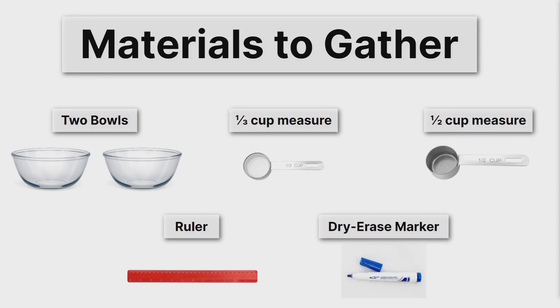You'll also want a dry erase marker to label each bowl as reactants or products. If you don't have a dry erase marker, you can use a sheet of paper and write reactants or products and put it in front of the appropriate bowl. Here are your materials to gather. If you're ready to proceed, you can pause the video and gather all of those materials, then come back and finish the lesson.